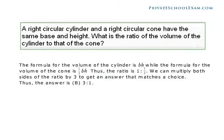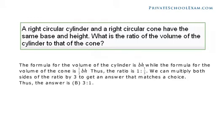A right circular cylinder and a right circular cone have the same base and height. What is the ratio of the volume of the cylinder to that of the cone? The formula of the cylinder is base times height, while the formula for the volume of the cone is 1/3 base times height. Thus, the ratio is 1 to 1/3. We can multiply both sides of the ratio by 3 to get an answer that matches a choice. Thus, the answer is 3 to 1.